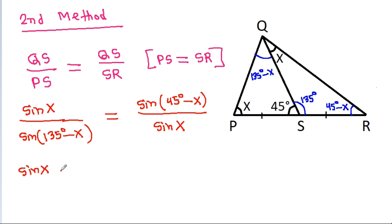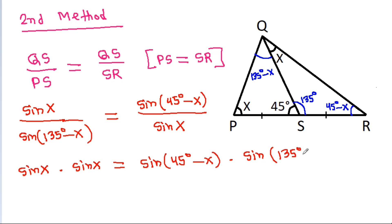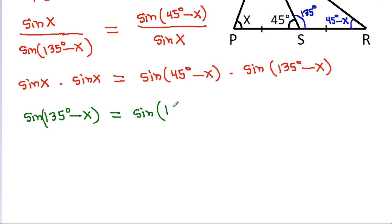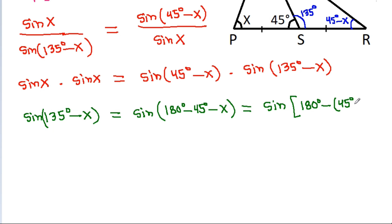And sin x times sin x equals sin(135° − x) times sin(45° − x). Now sin(135° − x) equals sin(180° − 45° − x), which simplifies to sin(45° + x).